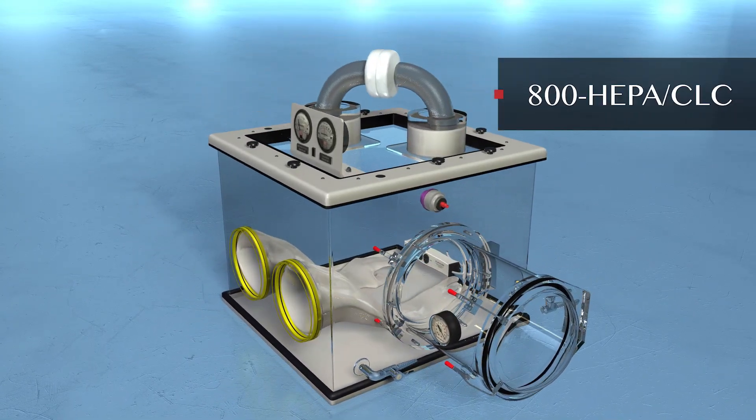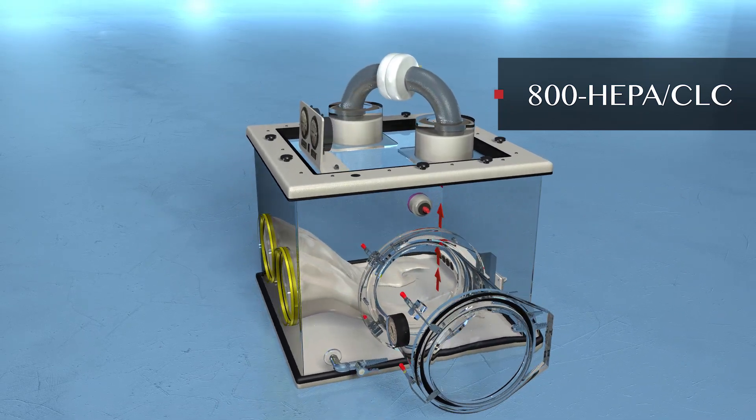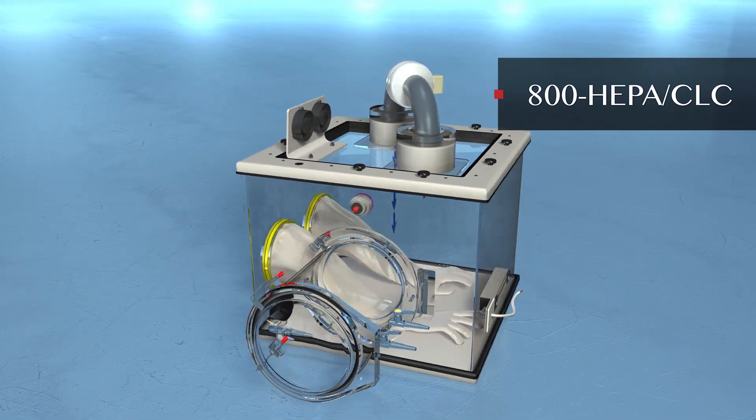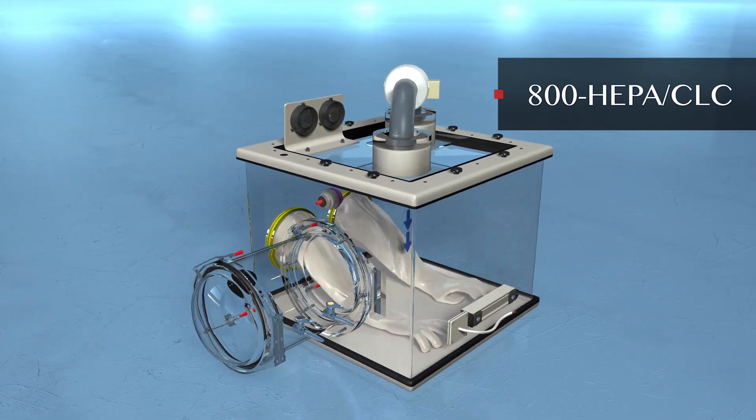800 HEPA CLC. Double HEPA filtered closed loop filtration system continuously circulates the internal atmosphere through two 8 inch round HEPA filters.